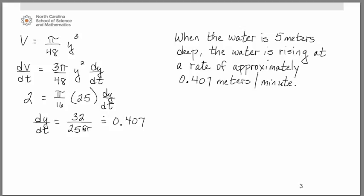What we were trying to find was dy/dt and y represented a height which is a linear measurement which we would be measuring in meters. And that's why this final rate we found is meters per minute.